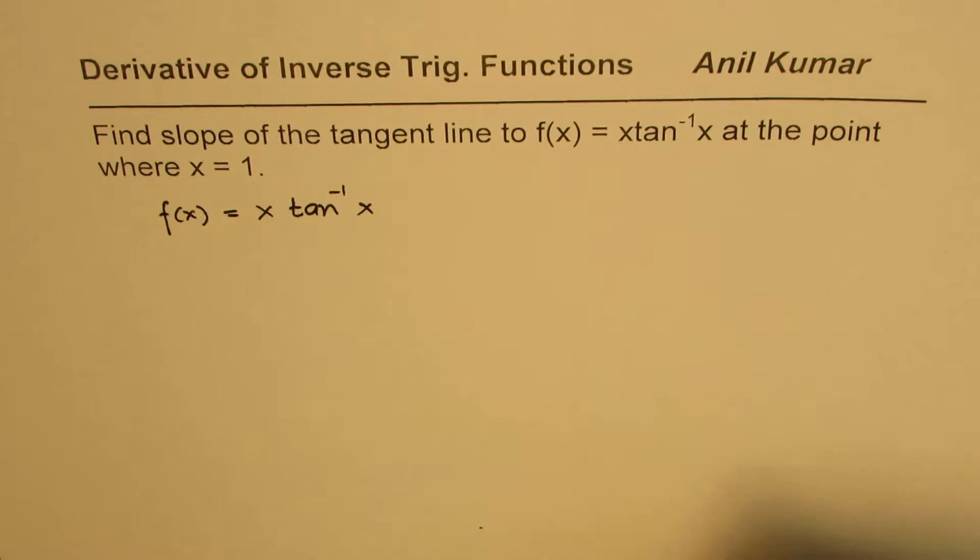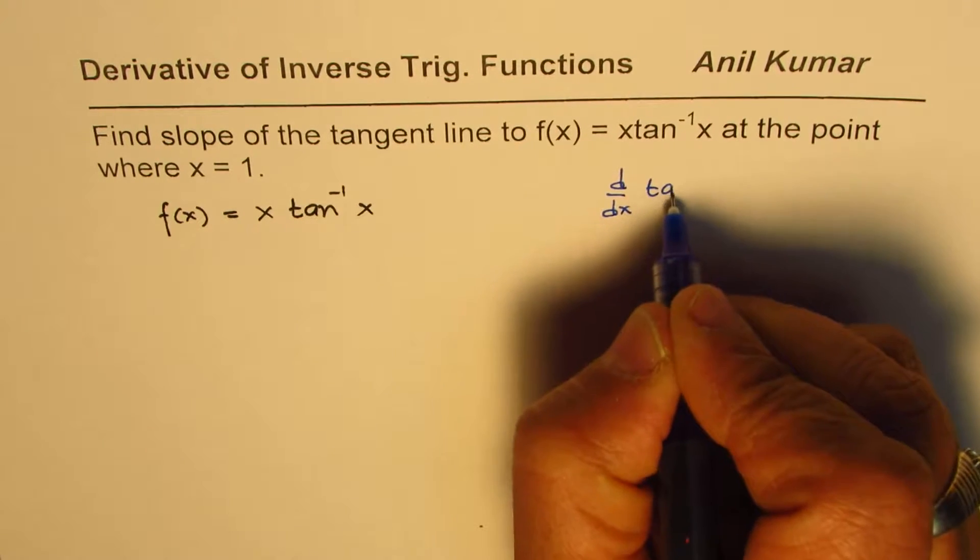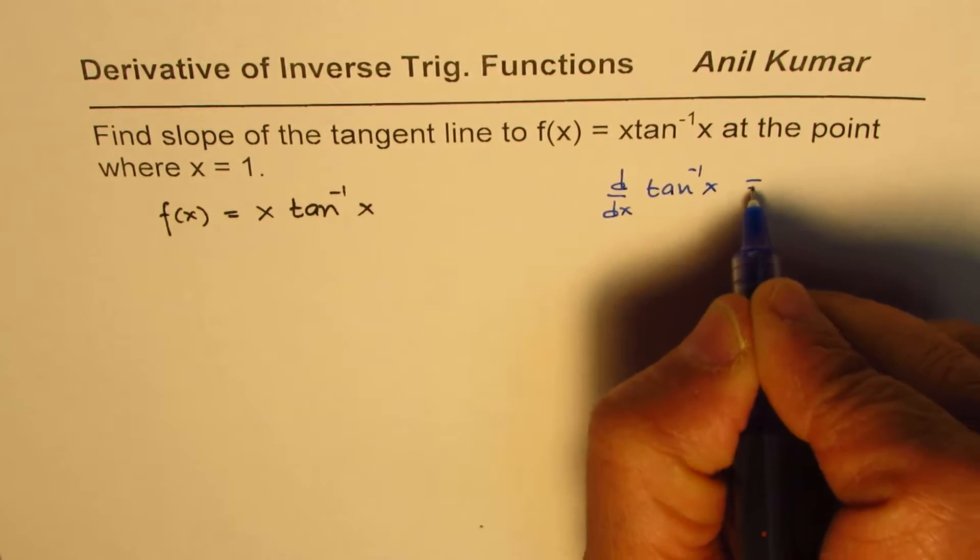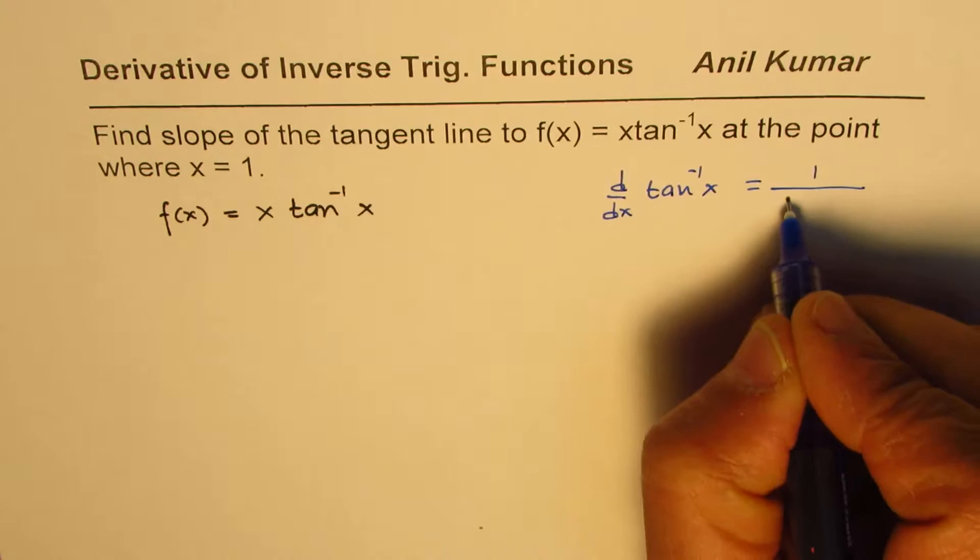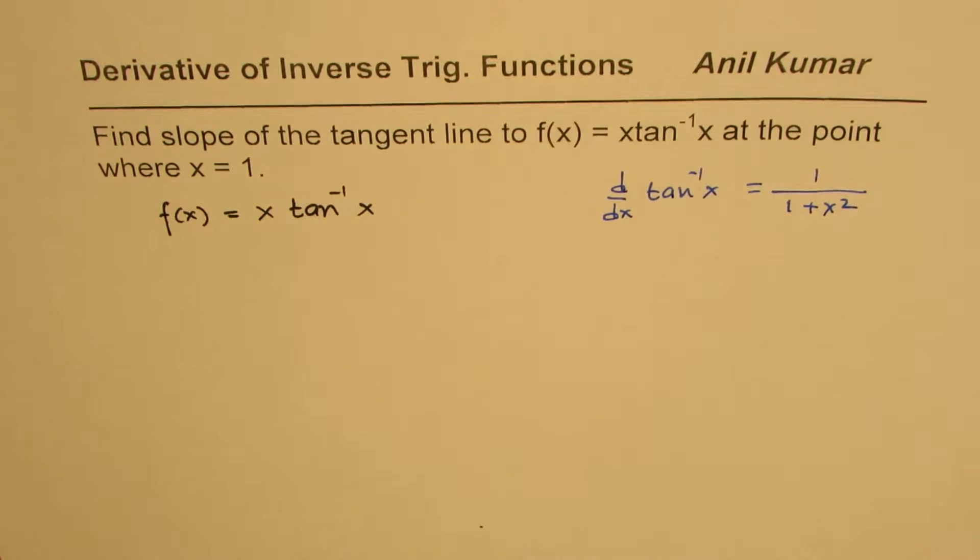The formula which you're going to use is d/dx of tan⁻¹x = 1/(1 + x²). And you know the product rule, so apply the formula and get the solution.